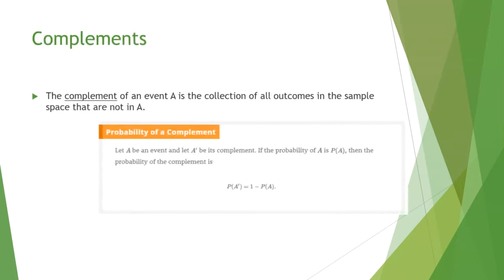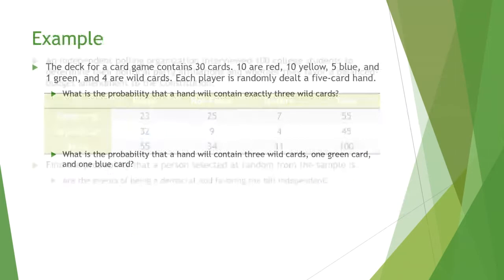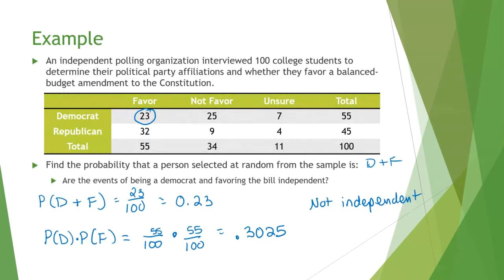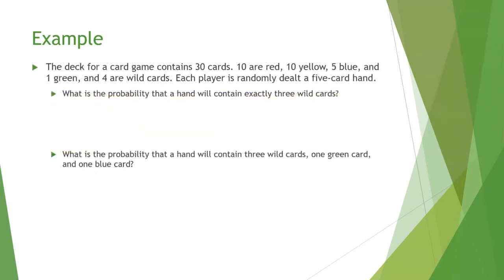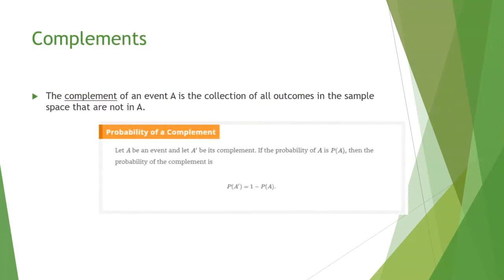The last topic is complements. The complement of event A is the collection of all outcomes in the sample space that are not in A. It's just one minus your probability. For example, if the probability of being a Democrat is 55 out of 100, then the probability of not being a Democrat is one minus 55 over 100, which is 45 out of 100. The two must add up to one. Sometimes it's easier to find the complement and work with that number.